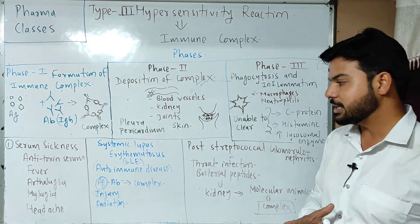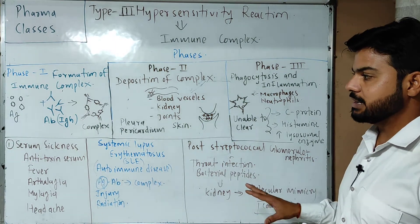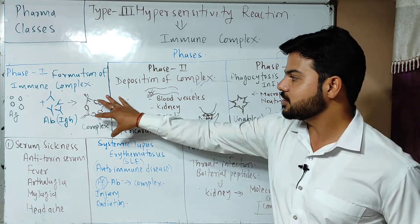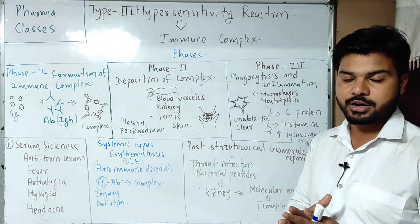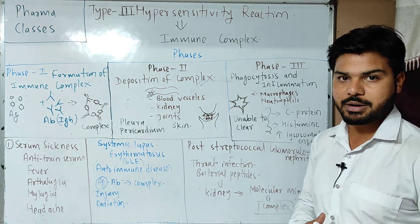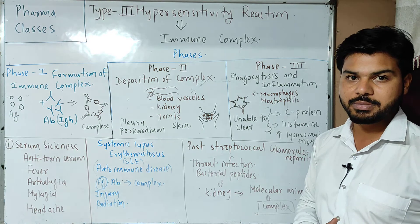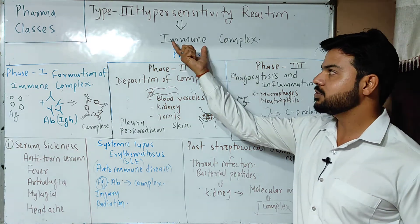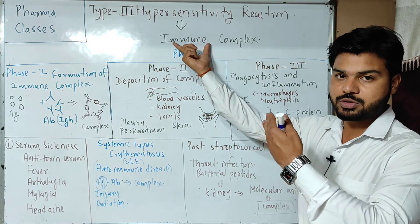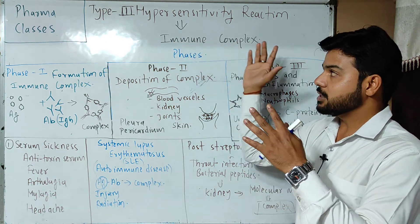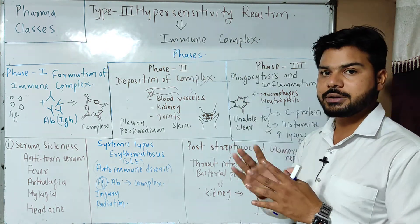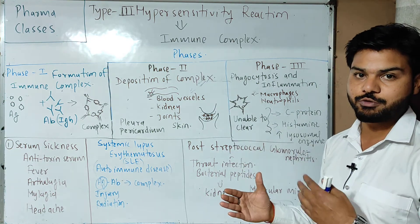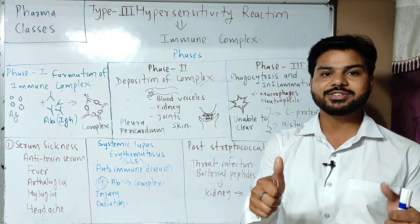These were some diseases associated with type 3 hypersensitivity. The treatment is similar — anti-inflammatory drugs can be given, and immunosuppressants can be given to suppress the immune complex response. Ultimately, type 3 hypersensitivity is different from type 1 and type 2, but types 1, 2, and 3 are all antibody-mediated hypersensitivities. Thank you and all the best.